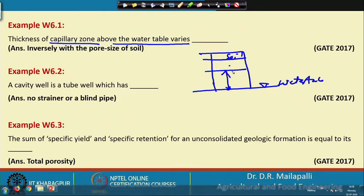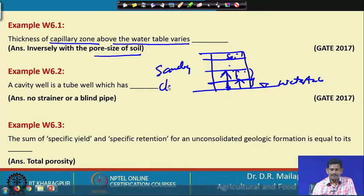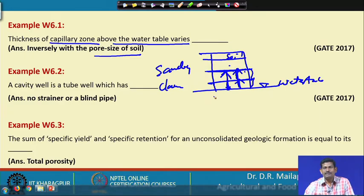This capillary zone above the water table — the thickness, meaning the rise. This thickness depends on the pore size of the soil. For sandy soils with larger pores, the thickness is smaller, whereas for clay soils the thickness is higher, because smaller pores have more surface tension and thus greater capillary rise.